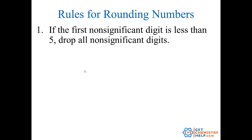There are three rules when it comes to rounding. Rule number one says if the first non-significant digit is less than five, then we drop all of the non-significant digits.